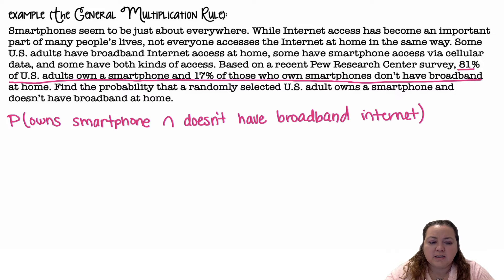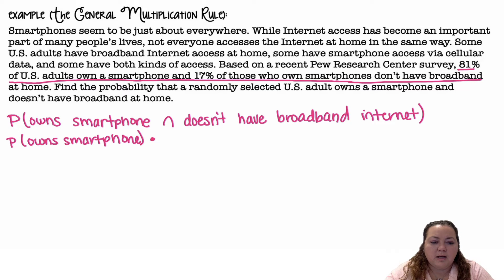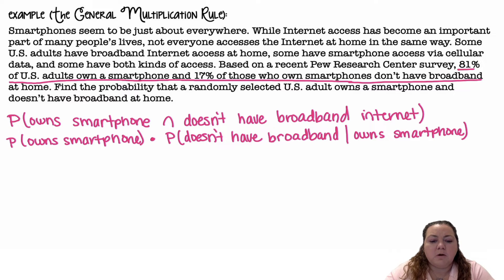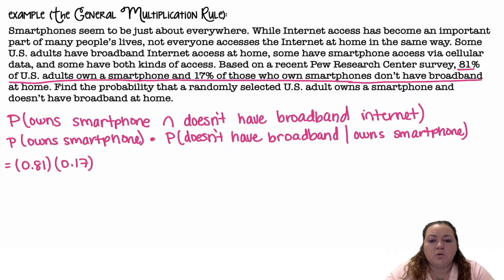Here's the information they gave us, and here's what we're trying to find: owns a smartphone and doesn't have broadband internet at home. You can shorten these with S for smartphone and B for broadband, so not broadband is B complement. I need to do the probability they own a smartphone times the probability that they don't have broadband given they own a smartphone. 81% own a smartphone, and of those that own a smartphone, 17% don't have broadband — so the probability of no broadband given smartphone was 0.17. Multiplying these gives 0.1377.